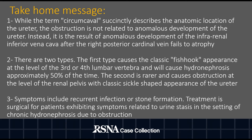The first type causes the classic fishhook appearance at the level of the third or fourth lumbar vertebra and will cause hydronephrosis approximately 50% of the time. The second type is rarer and causes obstruction at the level of the renal pelvis with a classic sickle-shaped appearance of the ureter. Symptoms include recurrent infection or stone formation. Treatment is surgical for patients exhibiting symptoms related to urine stasis in the setting of chronic hydronephrosis due to obstruction.